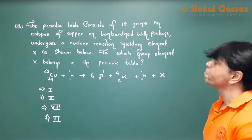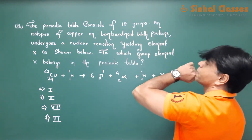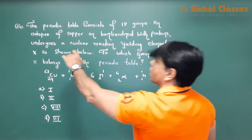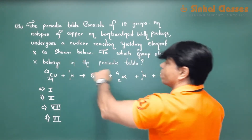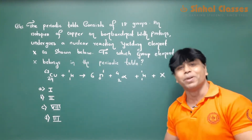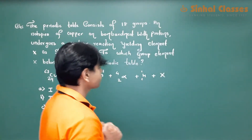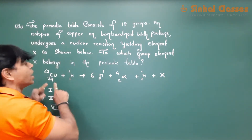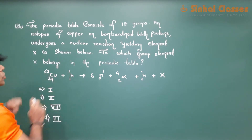Have a look at this question. The periodic table consists of 18 groups. An isotope of copper on bombardment with a proton undergoes a nuclear reaction yielding element X as shown. To which group does element X belong in the periodic table? The atomic number and mass number should be equal on both sides. So mass number: 63 plus 1 equals 64; here 6 plus 4 equals 10 and 10 plus 1 equals 11, so it should be 52 here.